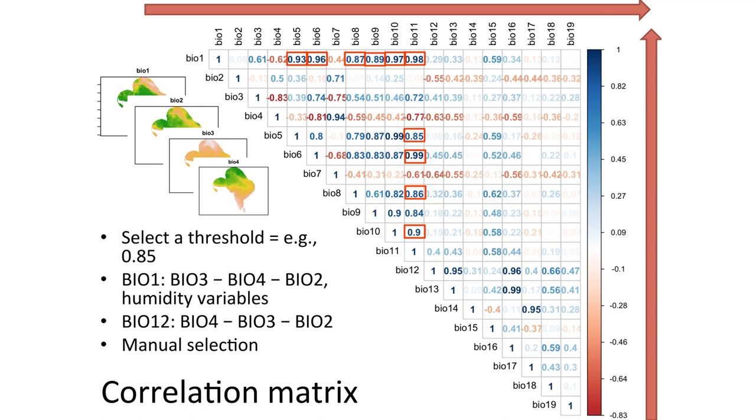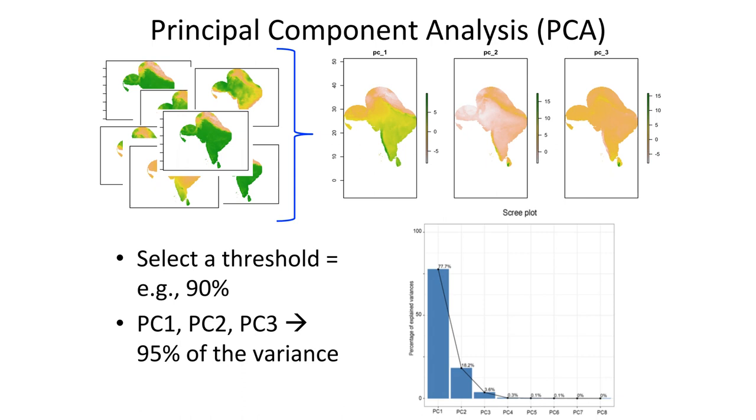So with this one, Bio-1 has a lot of correlation with different variables, but Bio-5, Bio-6 also have Bio-8 and Bio-10 have the same correlation with Bio-11. So in this way, we can get an idea about which variable is correlated with another one, and we choose one of those variables.